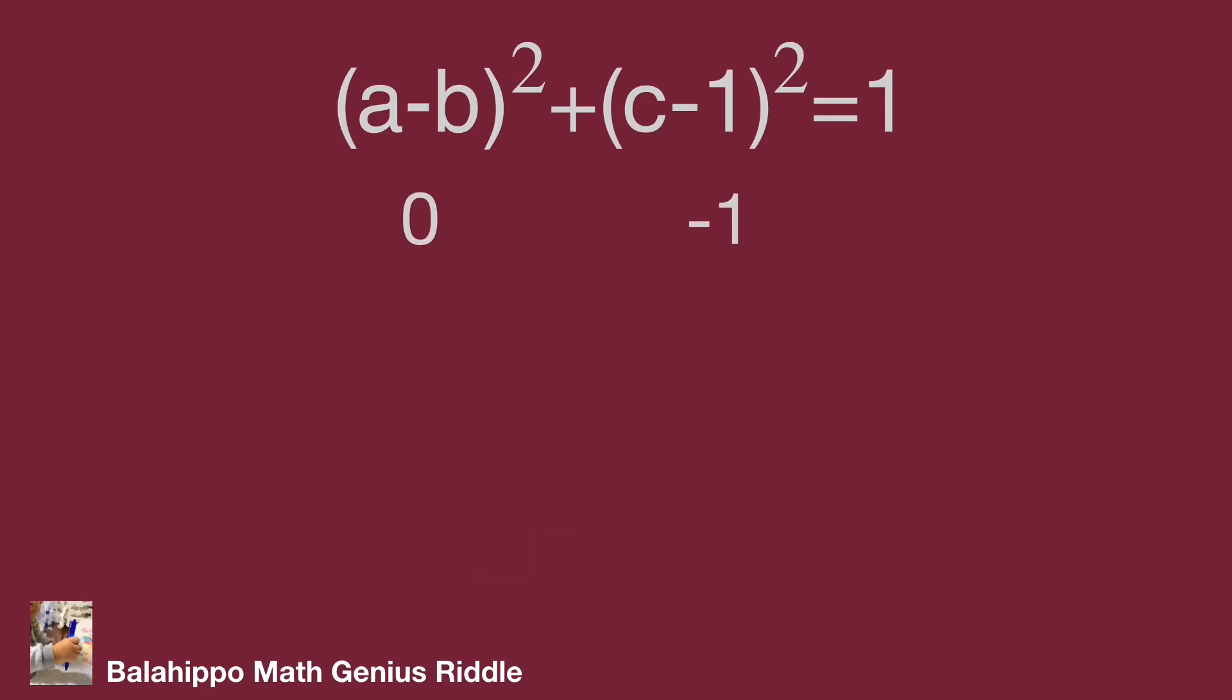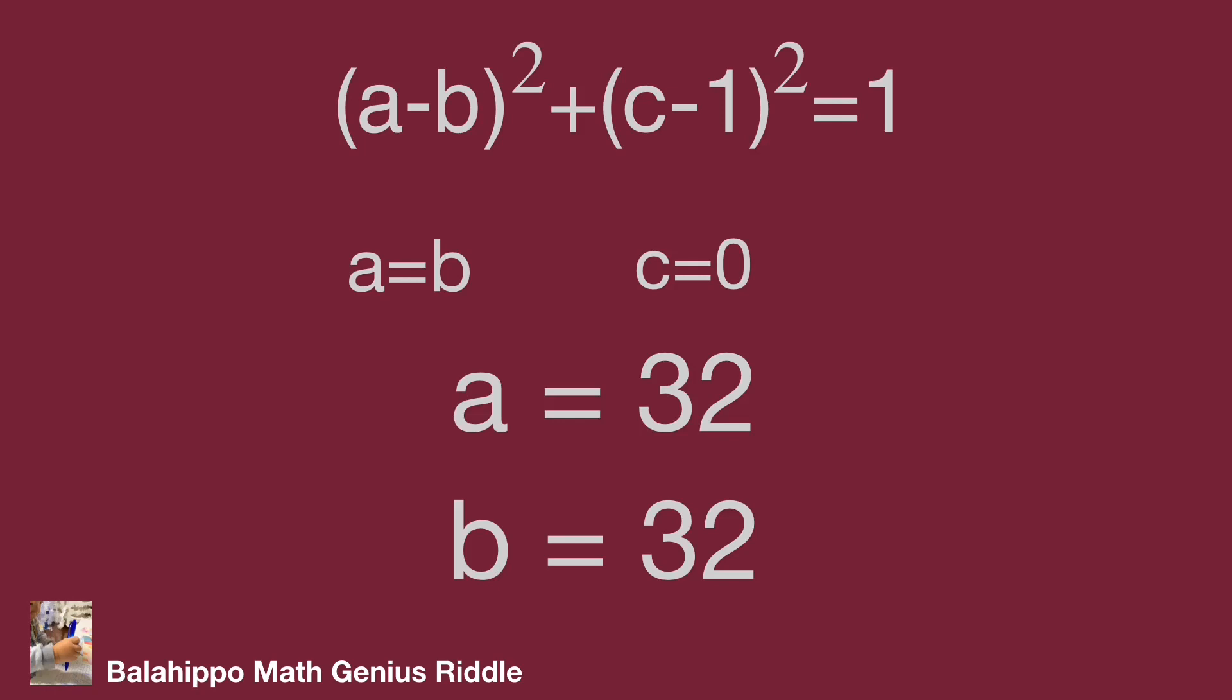In 0, -1 group, a - b equal 0, c - 1 equal -1, so a equals b, c equals 0. From a + b + c = 64, finally get a = 32, b = 32. This is the answer from the second group.